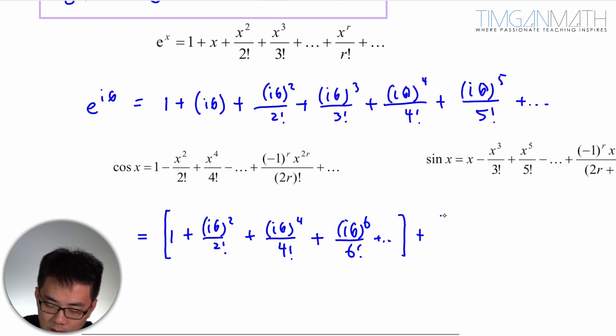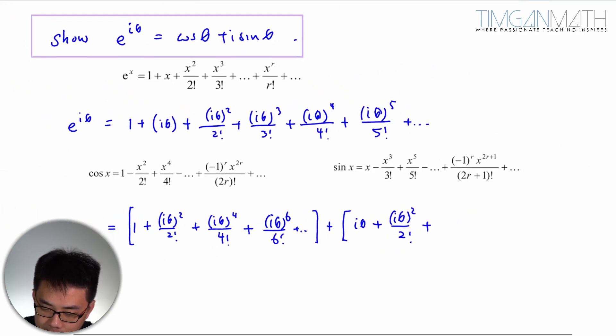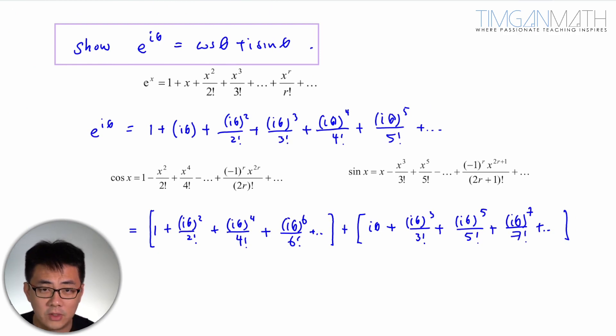Plus the odd power, which is iθ plus (iθ)³ over 3 factorial, plus (iθ)⁵ over 5 factorial. Okay, so that's it. It's just a very simple question.